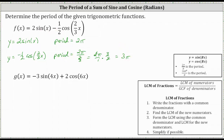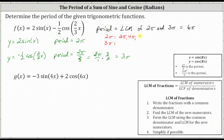So the period of f of x is equal to the least common multiple of two pi and three pi, which is equal to six pi. We can list out multiples to confirm: multiples of two pi are two pi, four pi, six pi, eight pi, and so on. Multiples of three pi are three pi, six pi, nine pi, and so on. The least common multiple of two pi and three pi is six pi.